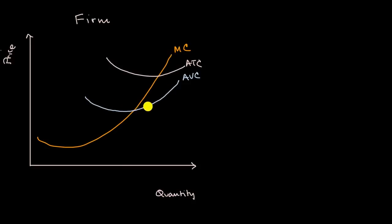And we've seen how that relates to average variable costs, that while marginal cost is below average variable cost, every incremental unit is going to bring down the average variable cost. But then when marginal cost crosses average variable cost, now every incremental unit is going to bring up the average variable cost. And the same thing happens once it crosses the average total cost.